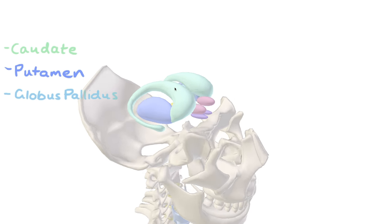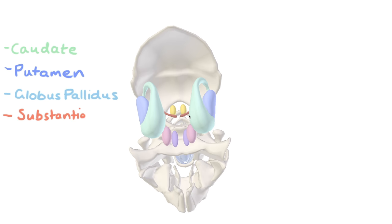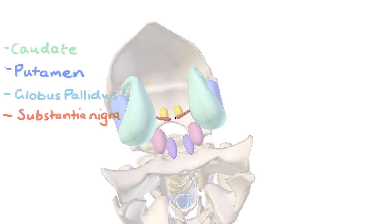Let's have a look at the other parts now. Next cab off the rank is the substantia nigra. They're embedded in the midbrain.